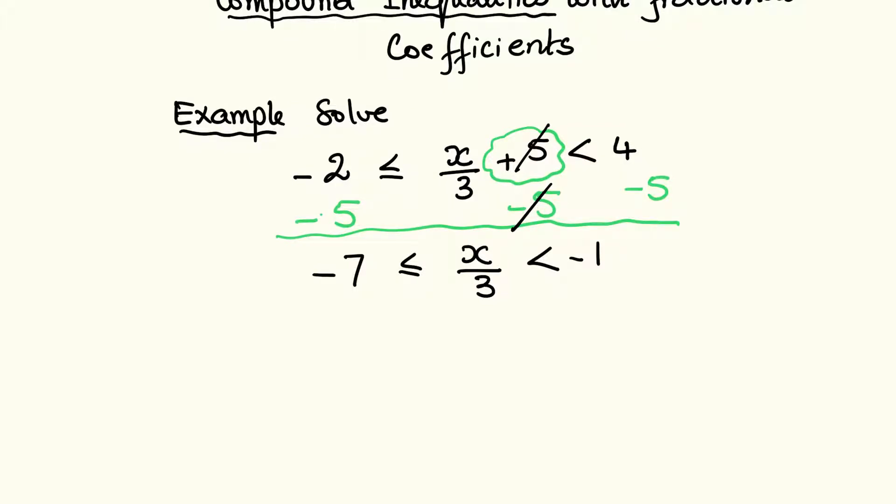over 3. So to get the x we will multiply the three sides of this compound inequality by 3. So we will multiply by 3: 3(-7) ≤ 3(x/3) < 3...